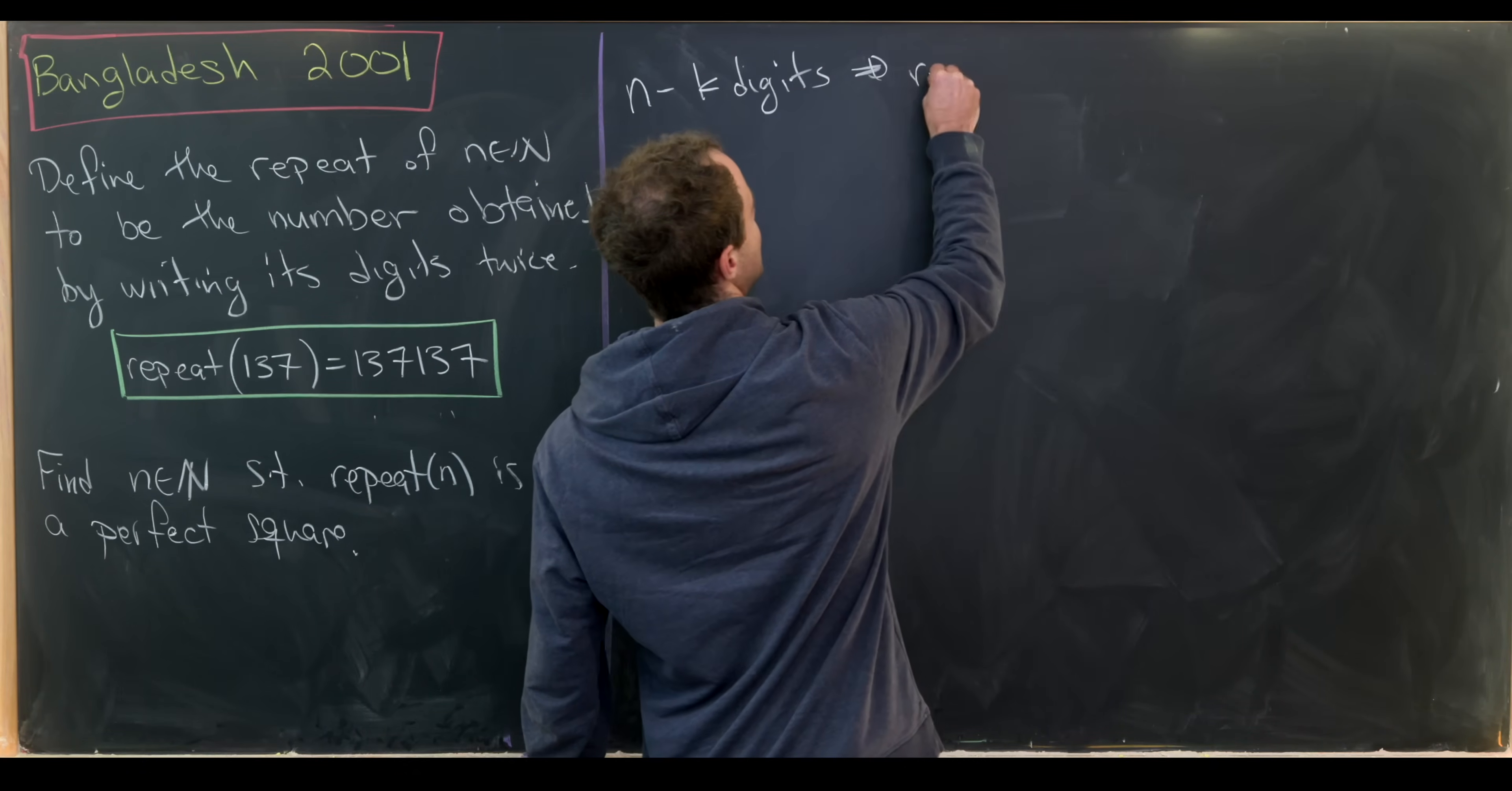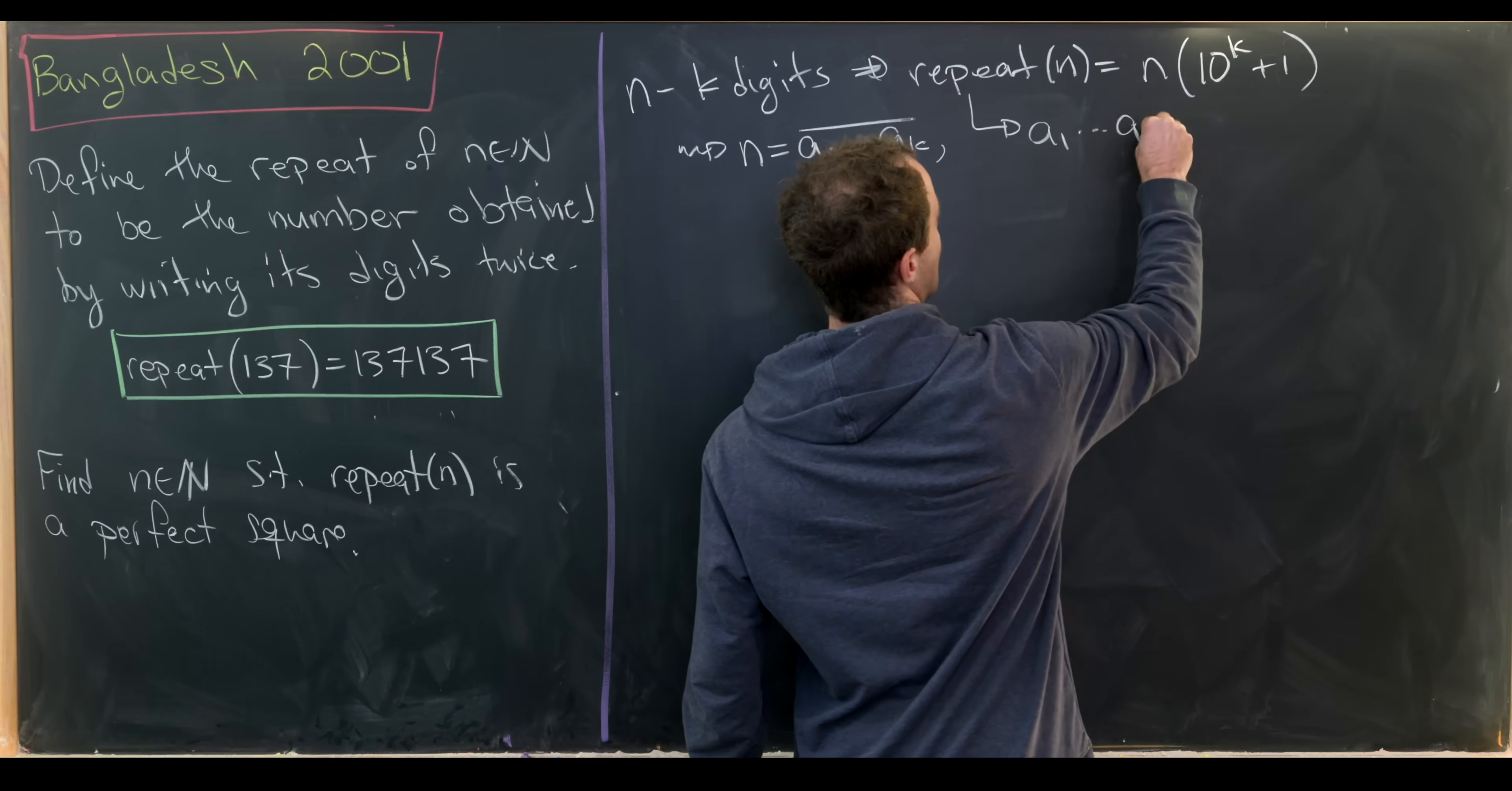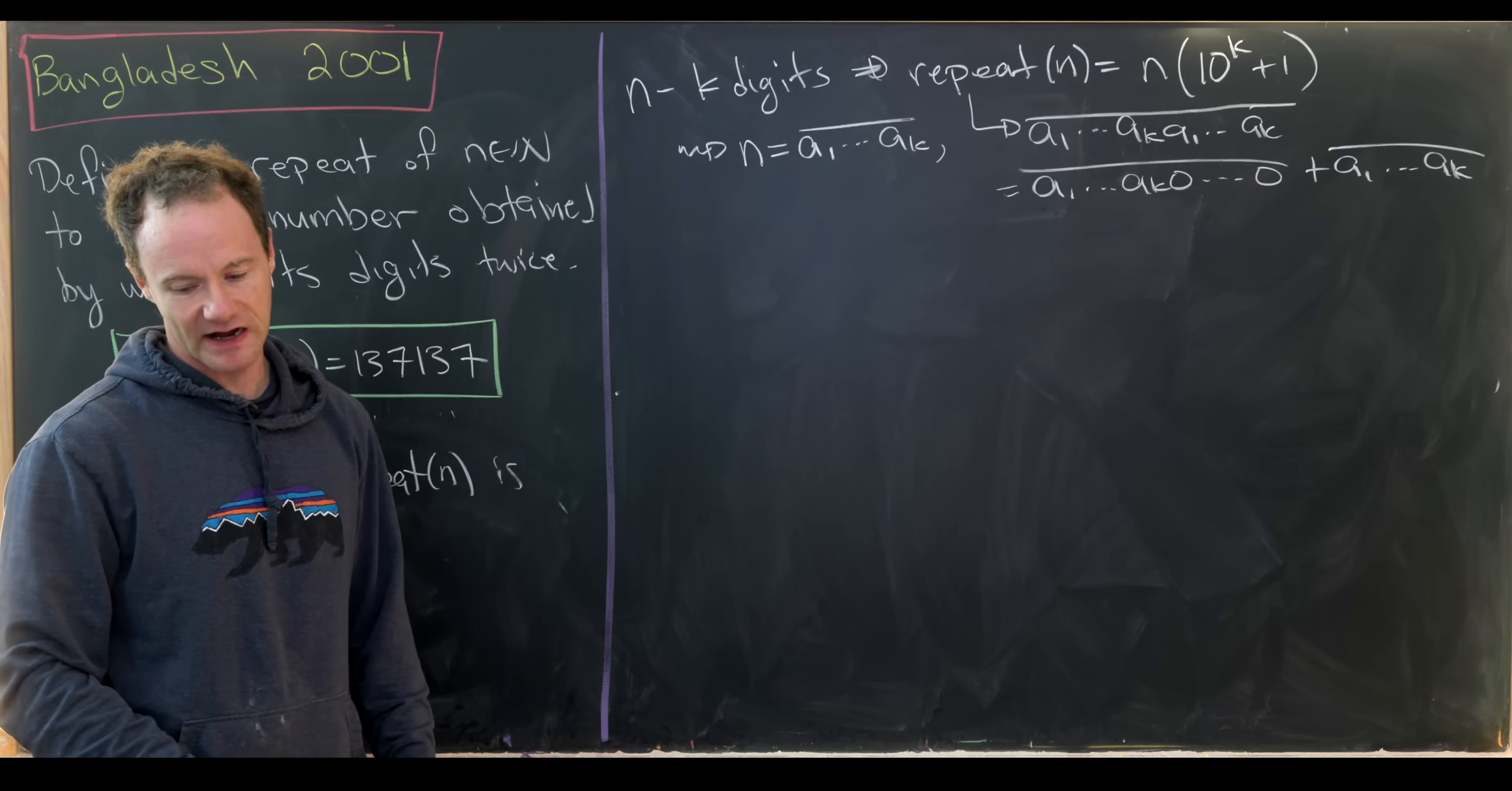So if n has k digits, that means that the repeat of n is equal to n times 10 to the k plus 1. And you can easily see this by the following sketch. This means n is equal to the digits a1 up to ak, but that means that the repeat of n is equal to a1 up to ak and then another a1 up to ak, which you could separate out into parts. So you could separate this out into a1 up to ak and then a bunch of 0s and then plus a1 up to ak. And then clearly this first term is 10 to the k times n and the second term is just n. So you can factor that out kind of as needed.